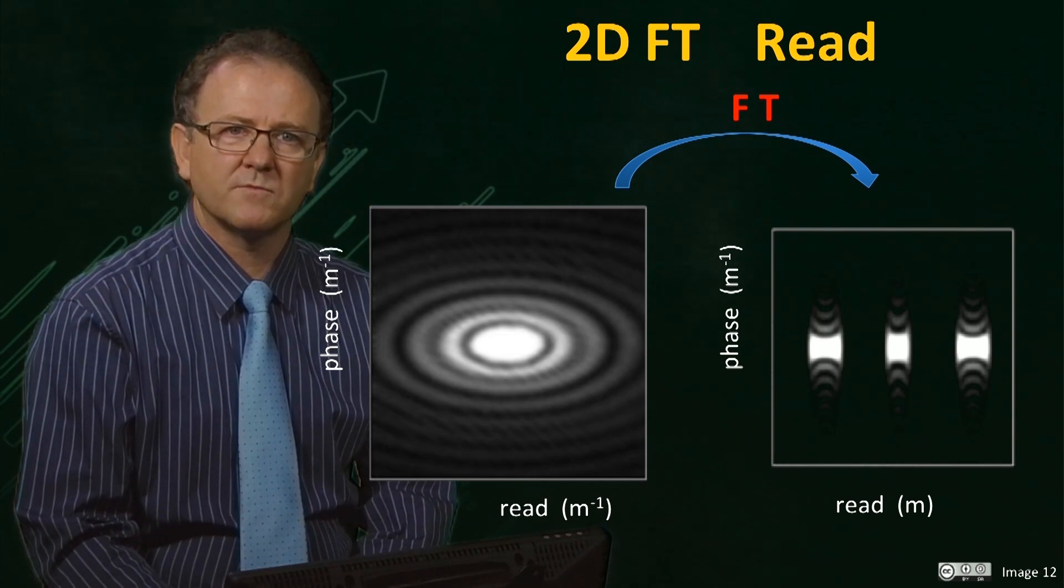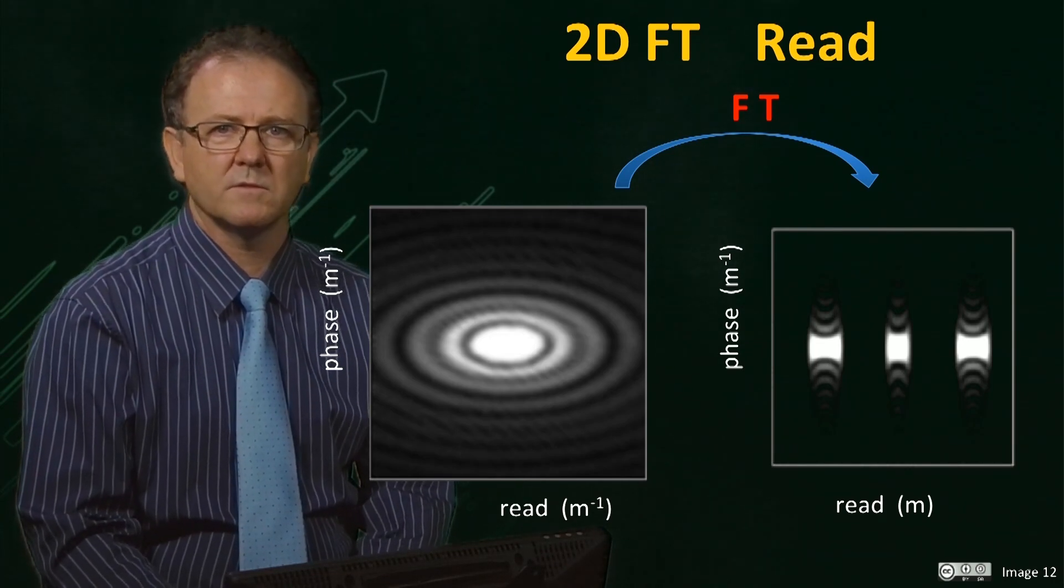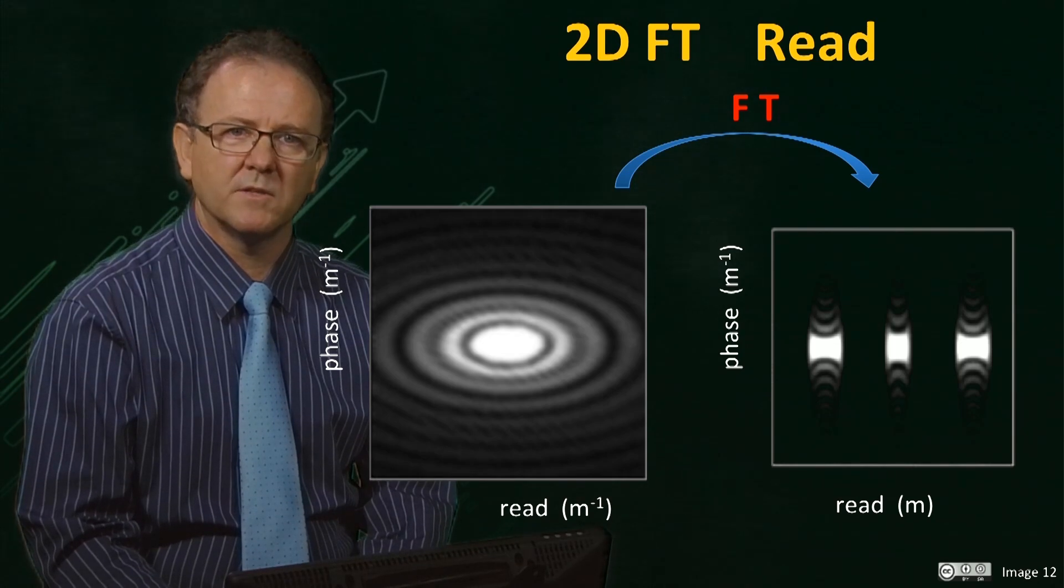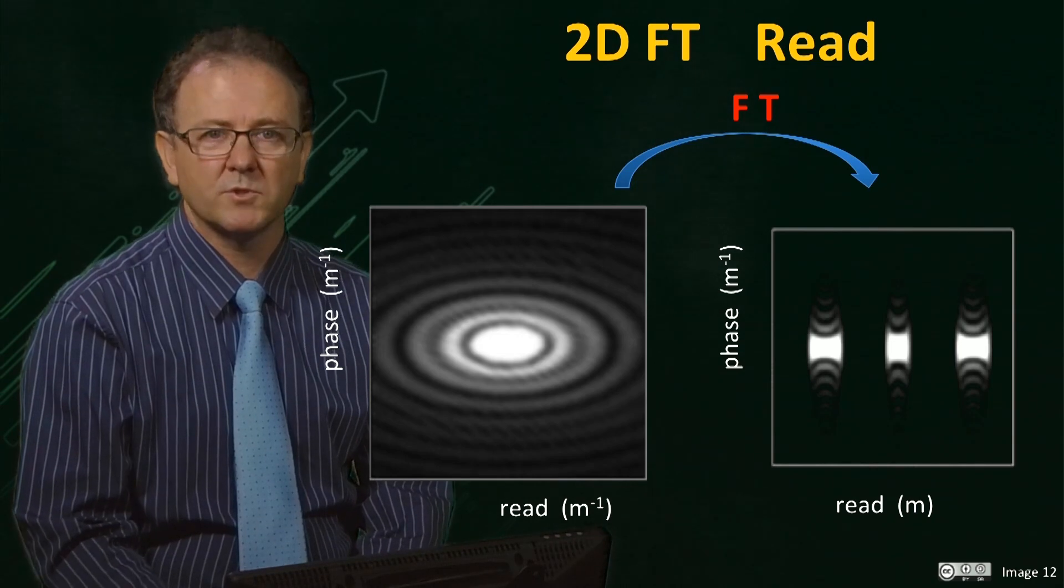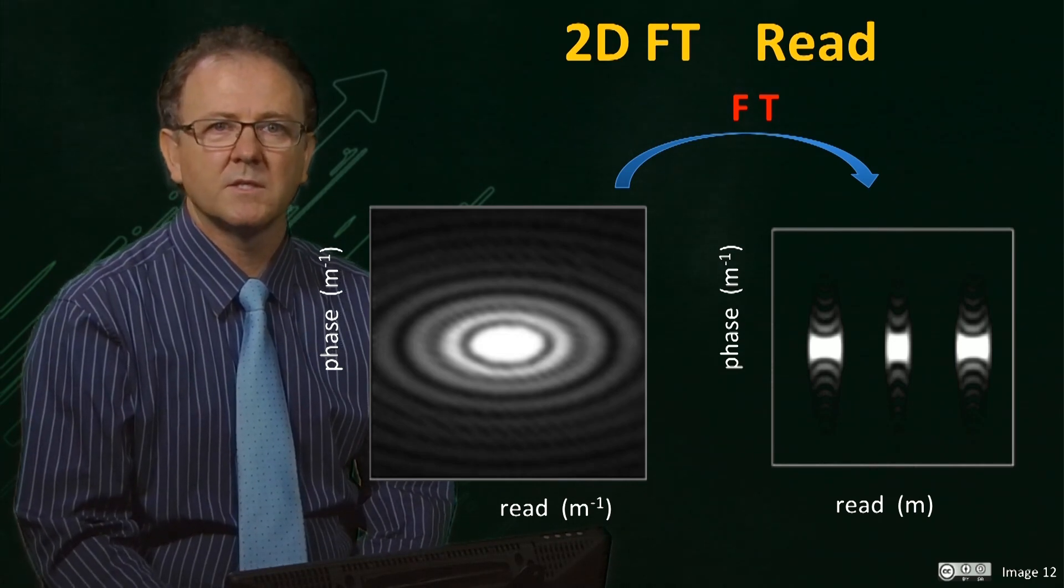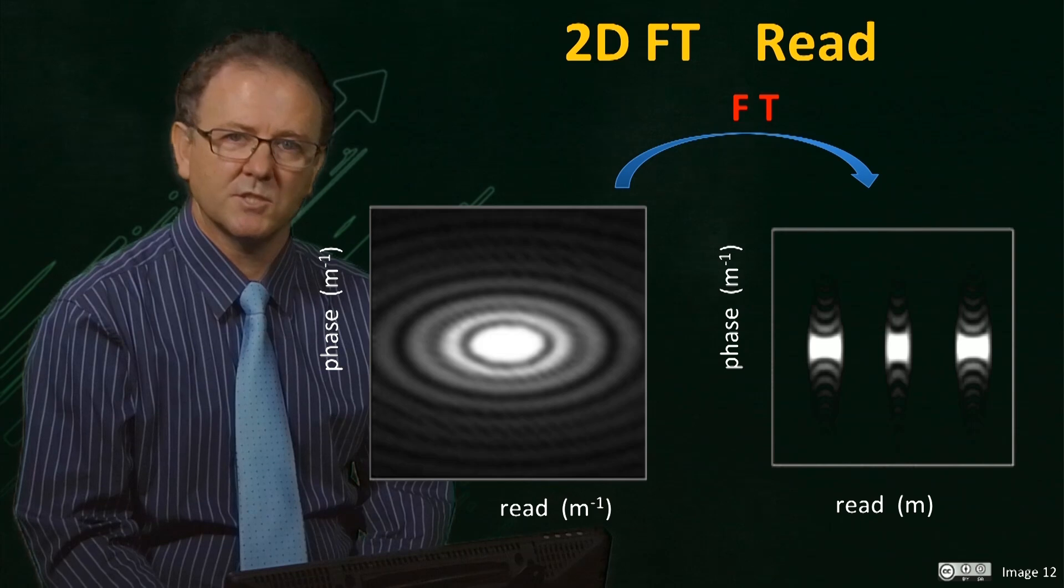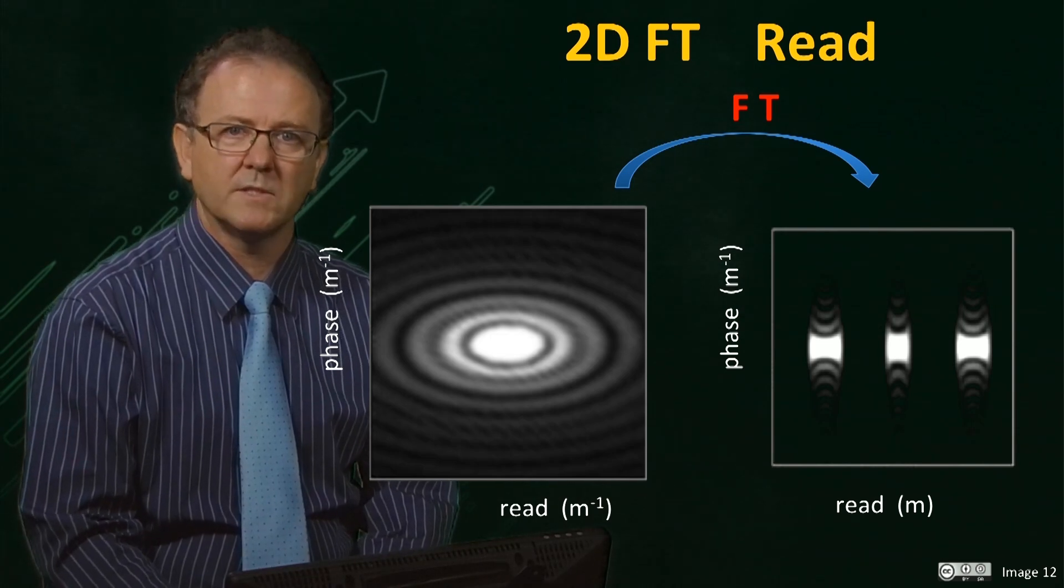First, if we Fourier transform each echo in the read direction, we obtain a spatial image in that direction. If we project the data matrix onto the read axis, we see a projection of the three samples. So we can now see the position and shape of the samples along the read direction.